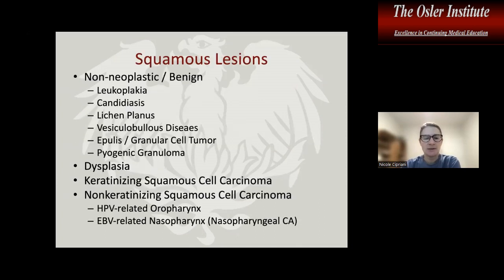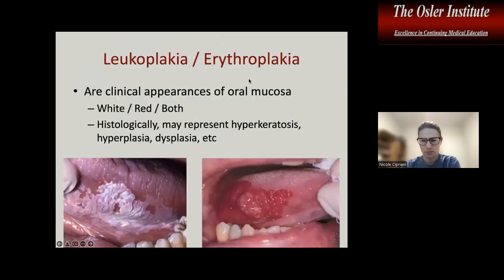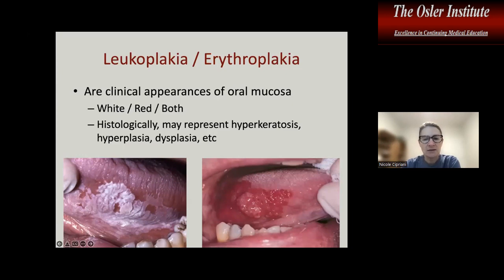We'll start with the squamous lesions, both non-neoplastic and neoplastic. One of the most common reasons people come to clinical attention in the oral cavity and mucosal surfaces is for leukoplakia and erythroplakia. As you know, leuko means white and erythro means red. These are clinical appearances of oral mucosa that histologically may represent a variety of entities ranging from purely hyperkeratosis to hyperplasia, infection, dysplasia, etc.